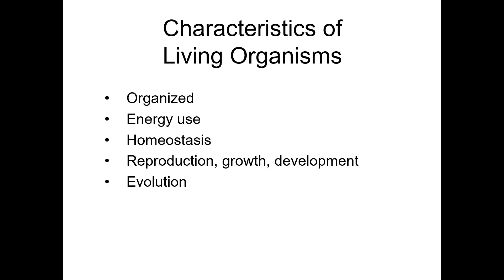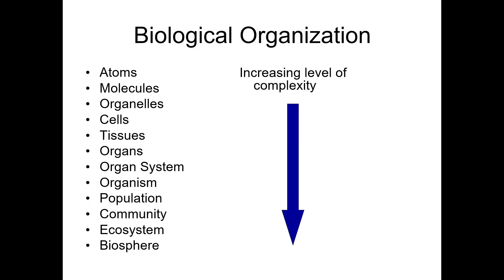Most of the life-is-organized questions are going to look at very specific levels of organization. There are two questions everyone will get on the quiz regarding biological organization. One will be a definition question — for example, which of the following is made up of many different types of cells that come together to form a higher function, with the answer being tissues. Or, when atoms come together to form more complex structures, this forms molecules. Your lecture notes give you lots of detail on these levels because knowing them is one of your quiz questions.